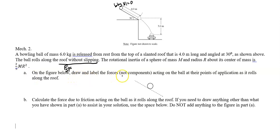We know rotational inertia is 2/5 MR squared. On the figure below, draw and label all the forces, not components, acting on the ball at the points of their application. We know we have gravity acting from the center of mass, normal force from the surface pushing up, and force of friction tangent to the surface of the ball.